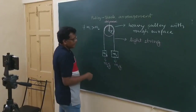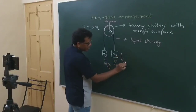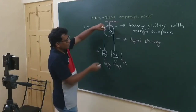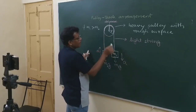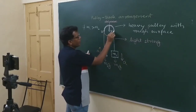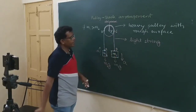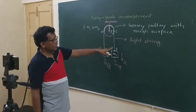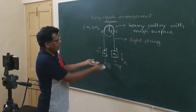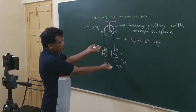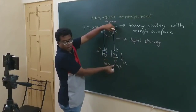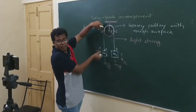If M1 is going downward being heavier and M2 is moving upward with the same acceleration, then suppose this point is identified as A, this point is B, this point is C, and this point is D. The portion of the string CD should increase whereas AB portion should decrease. If M1 is moving downward and correspondingly M2 is moving upward, then the portion of the string from C to D should increase and the portion from A to B must decrease.